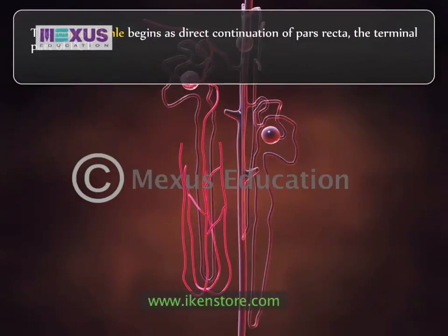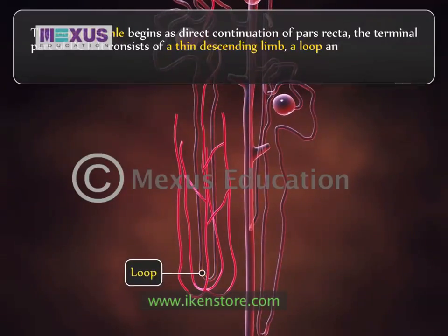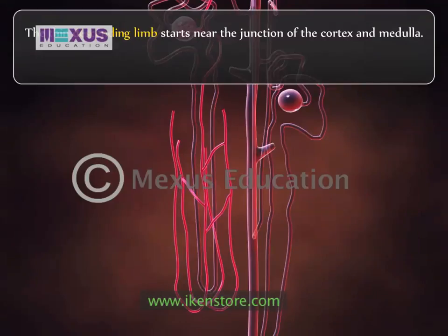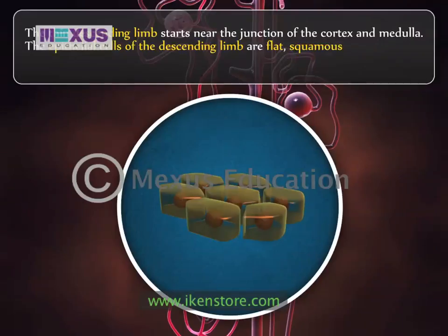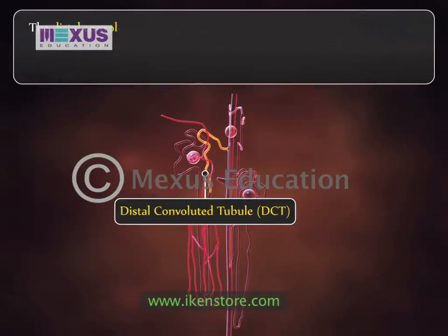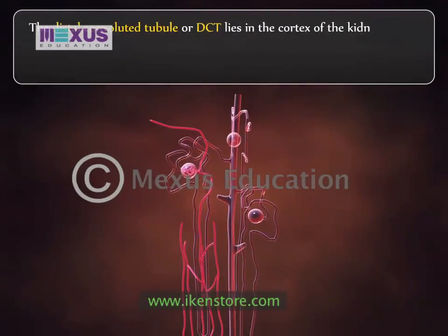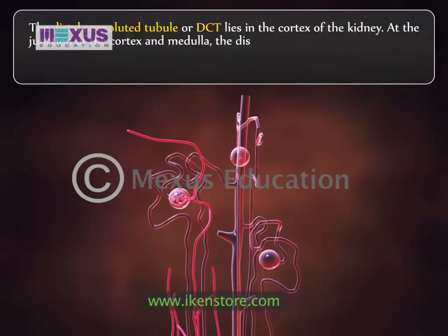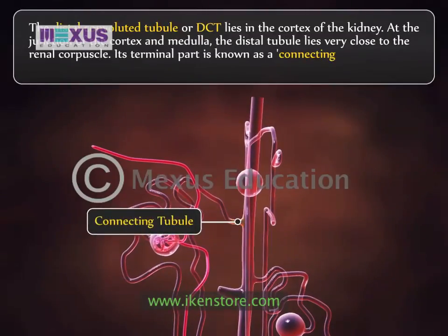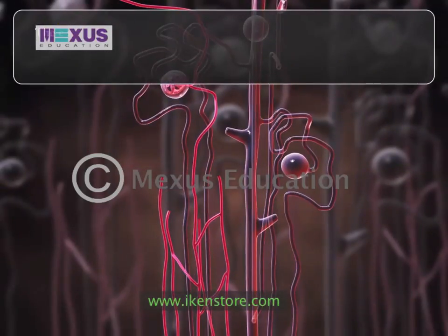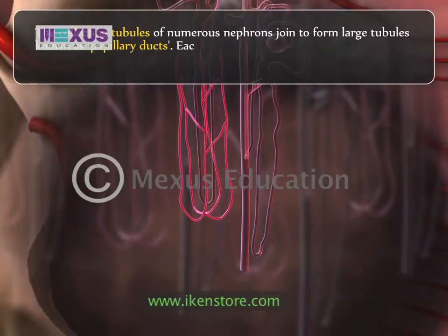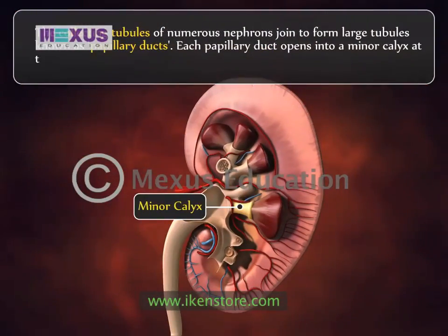The loop of Henle begins as a direct continuation of the pars recta, the terminal part of PCT. It consists of a thin descending limb, a loop, and a thick ascending limb. The thin descending limb starts near the junction of the cortex and medulla; its epithelial cells are flat squamous type, whereas those of the ascending limb are cuboidal. The distal convoluted tubule (DCT) lies in the cortex. At the junction of the cortex and medulla, the distal tubule lies close to the renal corpuscle, and its terminal part, the connecting tubule, joins the collecting duct. The collecting tubules of numerous nephrons join to form large tubules known as papillary ducts, each opening into a minor calyx at the apex of the renal papilla.